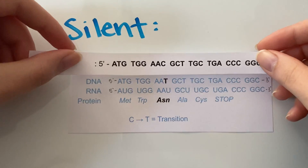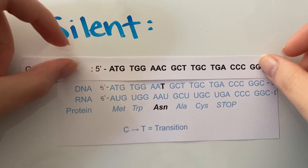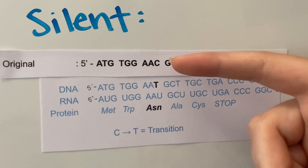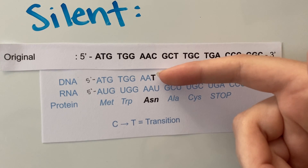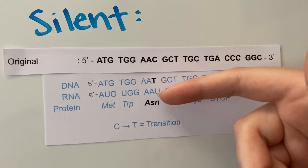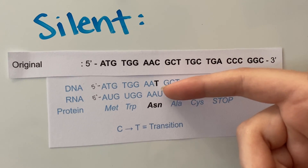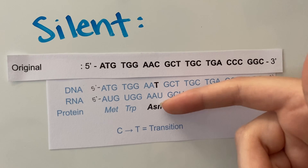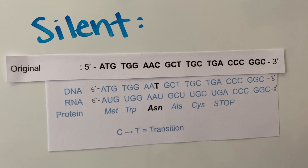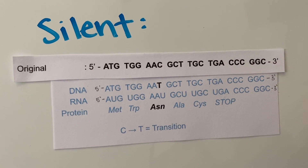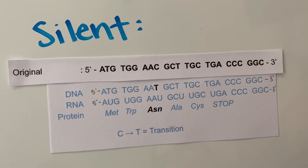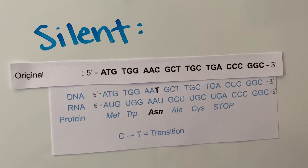Next we have a silent mutation. This is when even though the letter is being changed and coding for a new RNA, you will get the same protein. So a silent point mutation will code for the same amino acid.